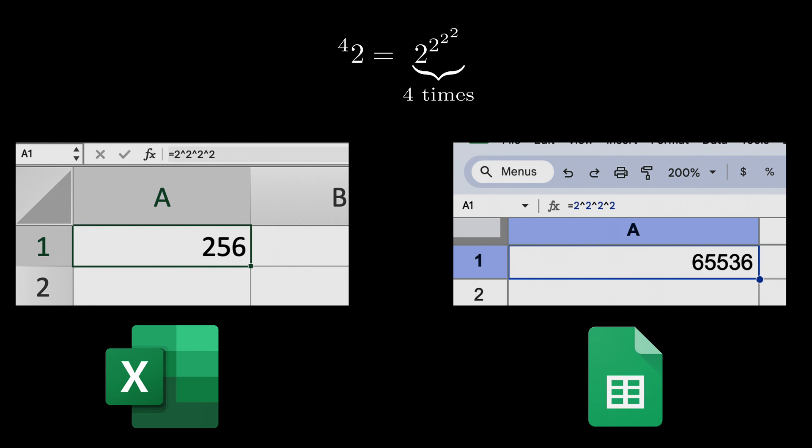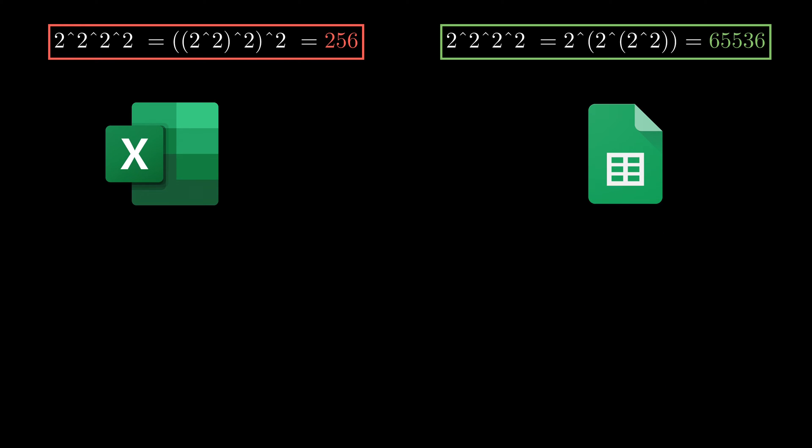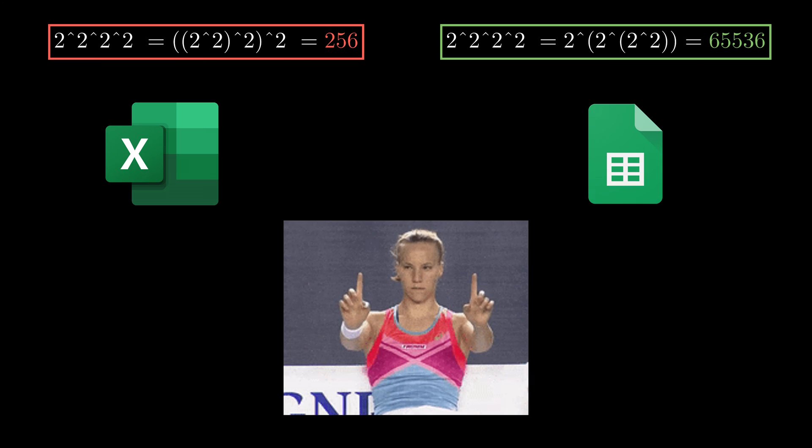If you try to evaluate this expression without using parentheses in both Google Sheets and Excel, they give different answers. Mathematically speaking, Excel thinks that the nested or towered exponentiations are left-associative, while Google Sheets thinks it's right-associative.